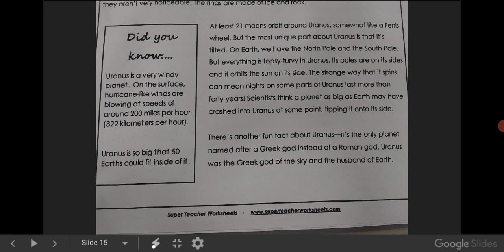There's another fun fact about Uranus. It's the only planet named after a Greek god instead of a Roman god. Uranus was the Greek god of the sky and the husband of Earth.